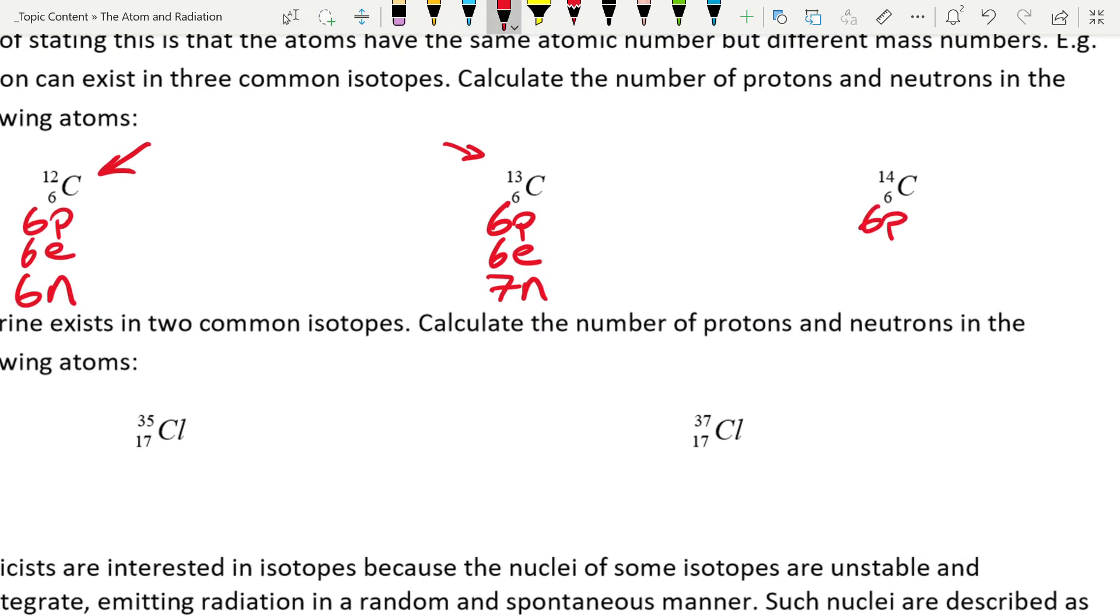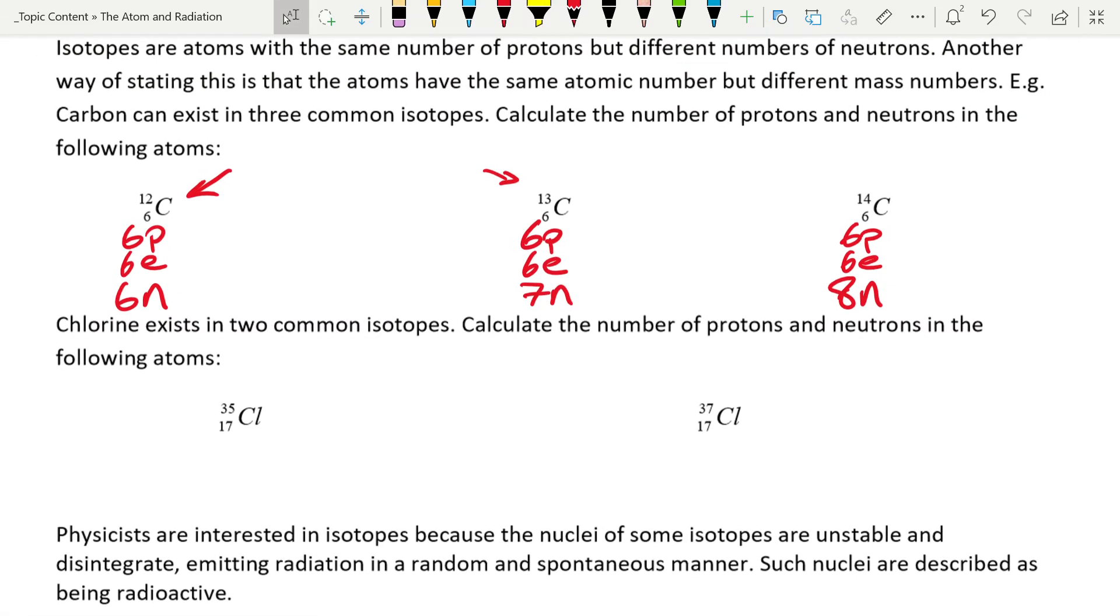Likewise, over here we have carbon-14, still atomic number of six—that's what makes it carbon, gives it six electrons—however, this will have eight neutrons. We call atoms that have the same atomic number (six here, six here, six here) but different mass numbers (12, 13, 14) isotopes.